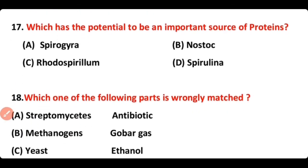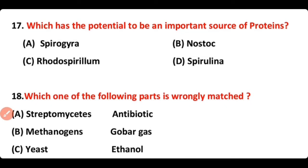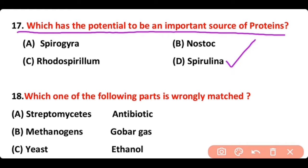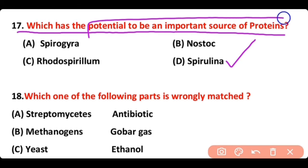Question number 17. Which one has the potential to become an important source of protein? Options: Spirogyra, Nostoc, Rhodospirillum, Spirulina. The correct answer is option D — Spirulina has potential to become an important source of protein.